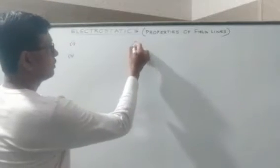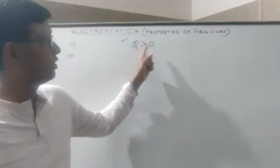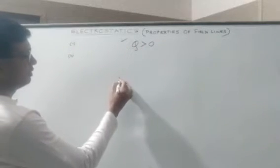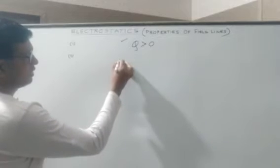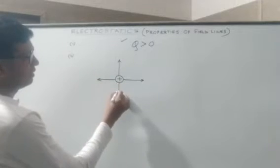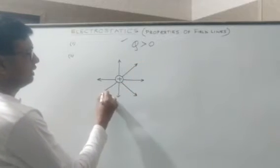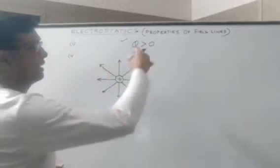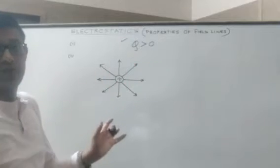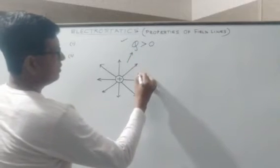For example, suppose we need to plot the field line for q greater than zero, meaning we are talking about a positive charge. The field lines will be spherically symmetrical — the same in every direction. So it emanates from the positive charge, with arrows directed outwards, and its influence is the same in every direction for a single isolated charge.